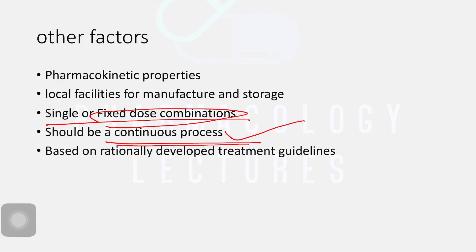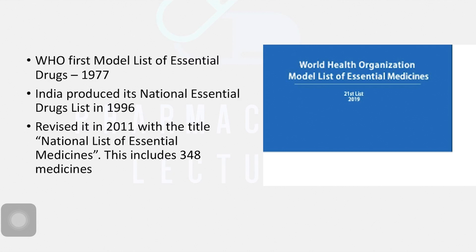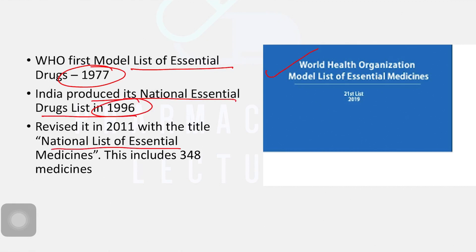Choosing the right drug for the right patient is called rationality, and based on this, treatment guidelines are developed. The WHO created its first essential medicine drug list in 1977. Different countries adopted those concepts, and India produced its National Essential Drug List in 1996. It was frequently revised, and the National List of Essential Medicines was last produced in 2011 and subsequently updated, now containing 348 medicines. If you search 'National Essential Medicine List of India' on Google, you will find this information.